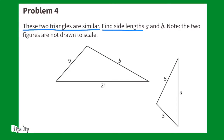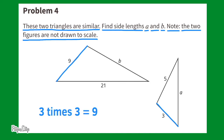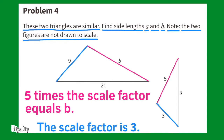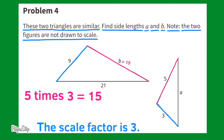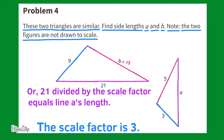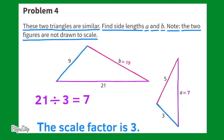Problem number 4. These two triangles are similar. Find side lengths A and B. Since these figures are not drawn to scale, we'll use the given information to find the scale factor. Looking at corresponding side lengths 3 and 9: 3 times 3 equals 9, so the scale factor is 3. For side length B: 5 times 3 equals 15, so the missing side length for B is 15. For side length A: 21 divided by 3 equals 7, so the missing length for A is 7.